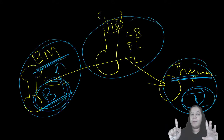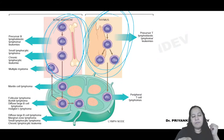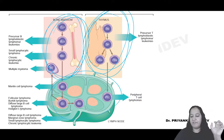Maturation in bone marrow: B lymphocyte. Maturation in thymus: T lymphocyte. Then B and T lymphocytes go to the lymph nodes and are arranged accordingly. Formation is always in bone marrow; it is the organ of maturation that differs.